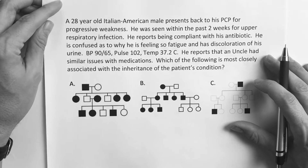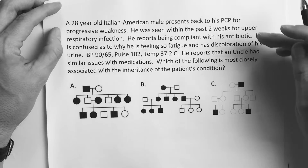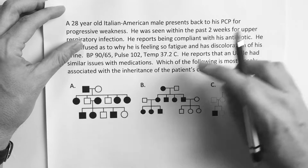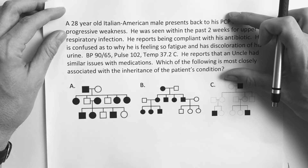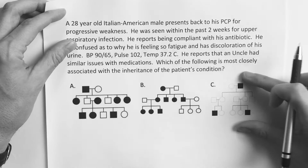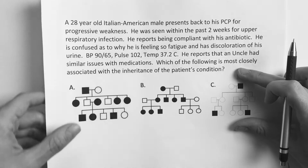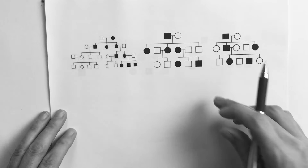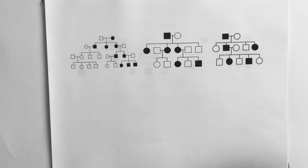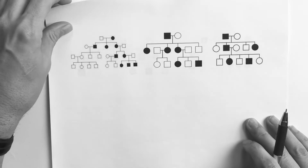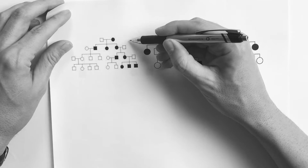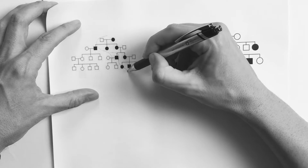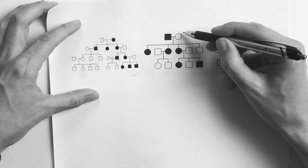All right guys, here is the genetics video. A question like this you're definitely going to see on the Step exams — they're going to give you a pedigree for your answer choices and you'll have to determine a diagnosis. We're going to develop a little system to determine whether something is autosomal or X-linked or dominant or recessive. The first thing you want to do is look and determine: is it in every generation? Follow it down to make sure it doesn't skip anywhere.